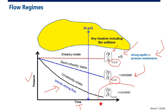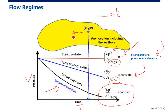For unsteady state or transient flow, the rate of change of pressure is not constant. It changes with respect to both time and location. Moving from one location to another, the rate of pressure decrease differs everywhere in the reservoir — they are all different.